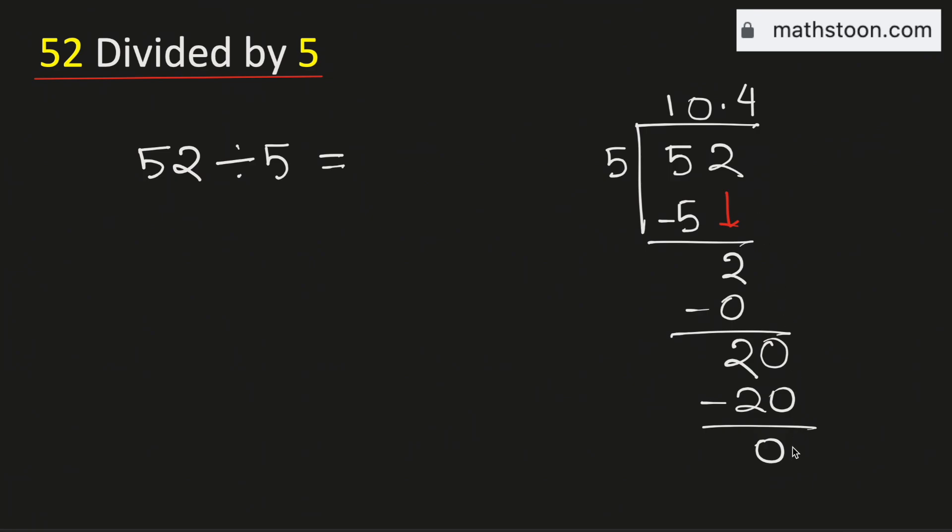As there is no number to bring down here, and we have obtained the number 0, we will stop. Therefore, 52 divided by 5 is equal to 10.4. And this is our final answer.